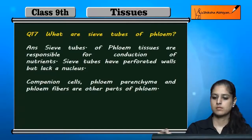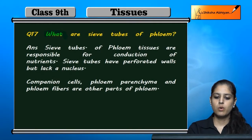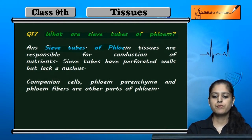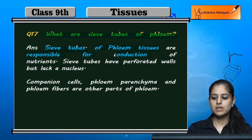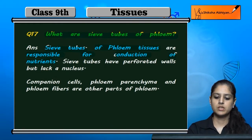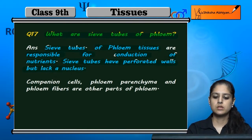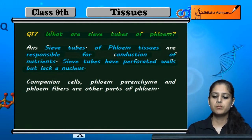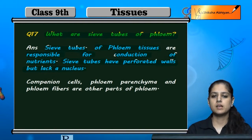Question number 17: What are sieve tubes of phloem? The sieve tubes of phloem tissues are responsible for the conduction of nutrients. They have perforated walls. The sieve tubes of phloem tissues help conduct and transport nutrients in the plant body.